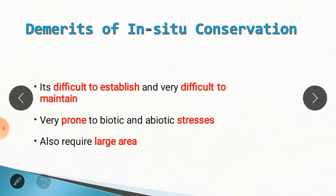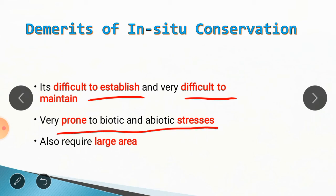Demerits of in-situ conservation: it is difficult to establish and very difficult to maintain because it requires large areas, specifically hills and mountains. It is very prone to biotic and abiotic stresses. Natural selection will operate in those spaces, which can also result in loss of genetic diversity, and it requires a large area. Each protected area will cover only a very small portion of total diversity of a crop species, so we have to conserve several areas for a single species.